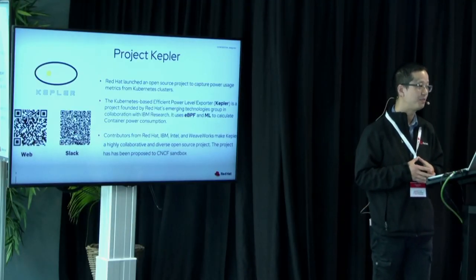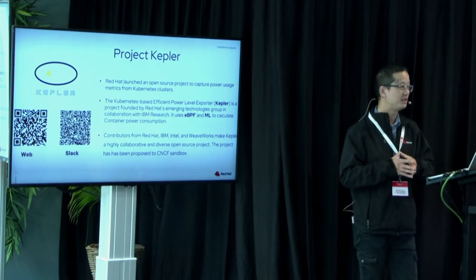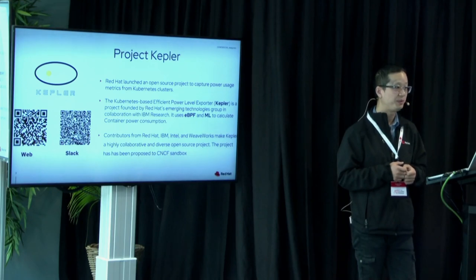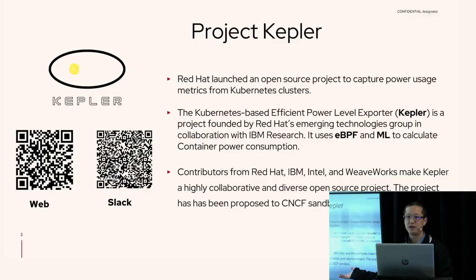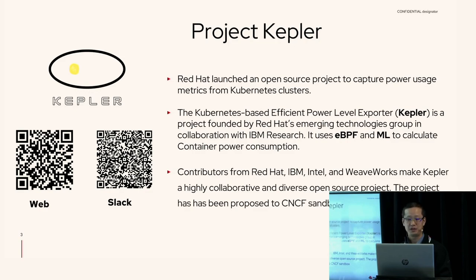Kepler stands for Kubernetes Efficient Power Level Exporter. It uses eBPF as the underlying technology to collect information from your hardware and workloads, and then uses machine learning models in the background to calculate energy consumption. This is a diverse and highly collaborative project, started by Red Hat, IBM, Intel, and many other community contributors. We recently donated the Kepler project to CNCF for sandboxing, and we hope to receive more contributions from around the world.